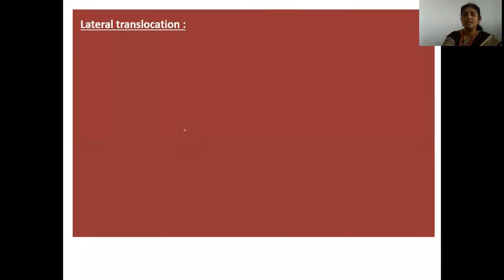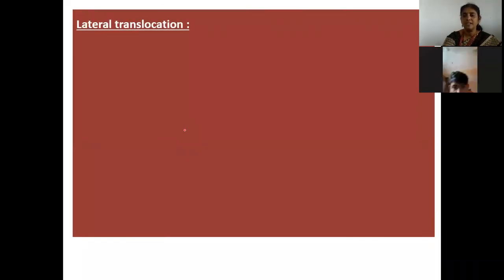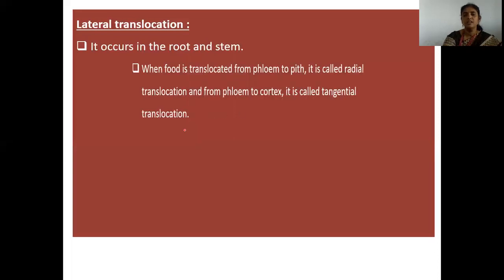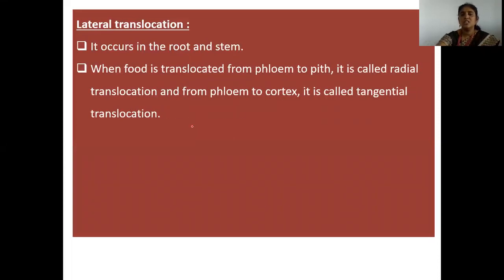Lateral translocation occurs in the root and stem. When food is translocated from phloem to pith it is called radial translocation, and from phloem to cortex it is called tangential translocation.